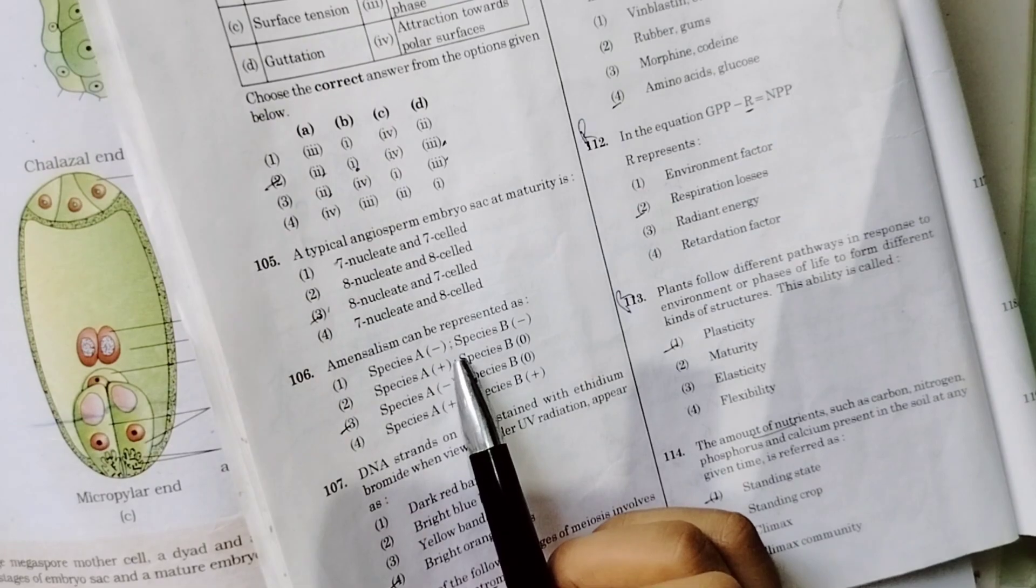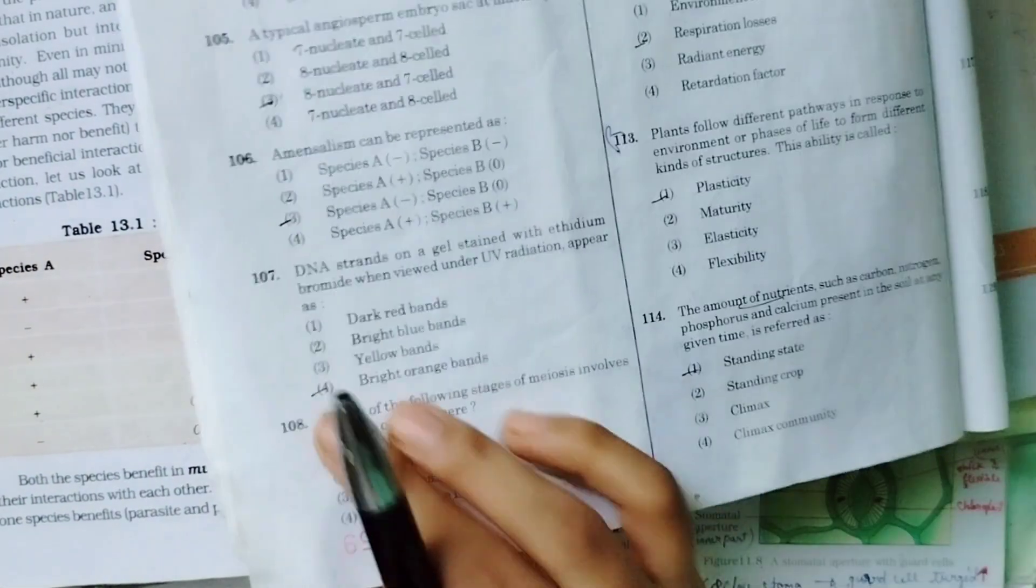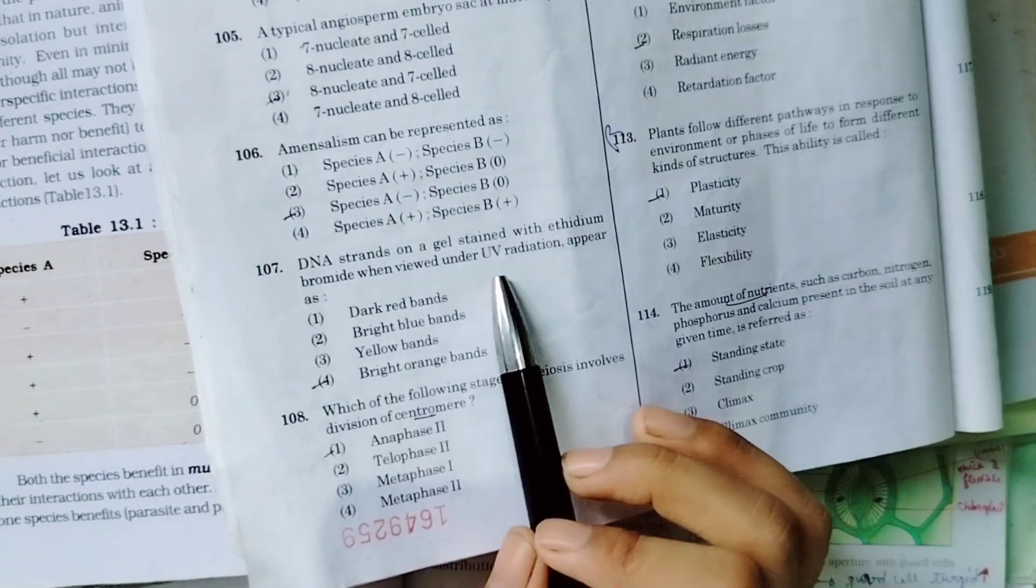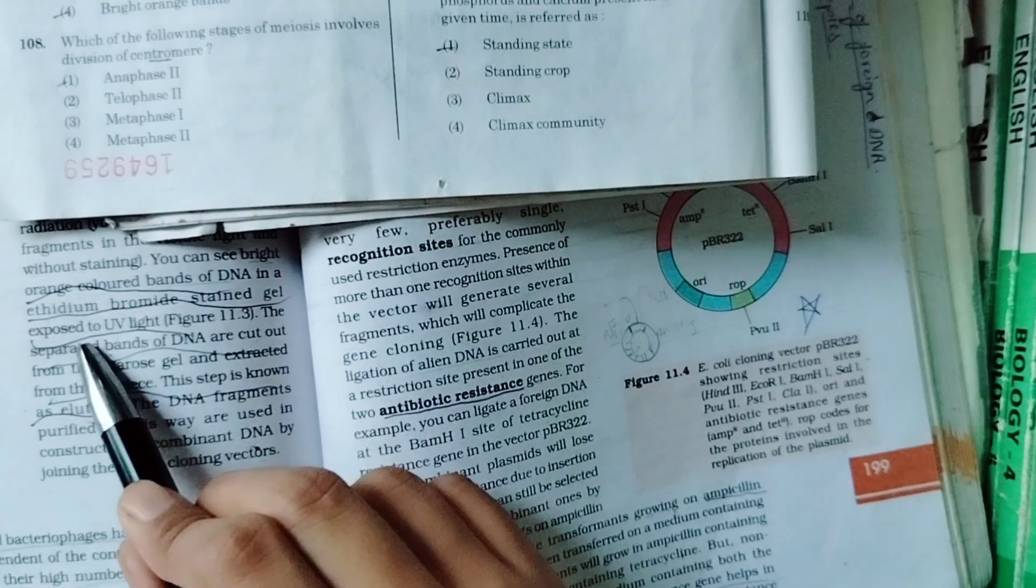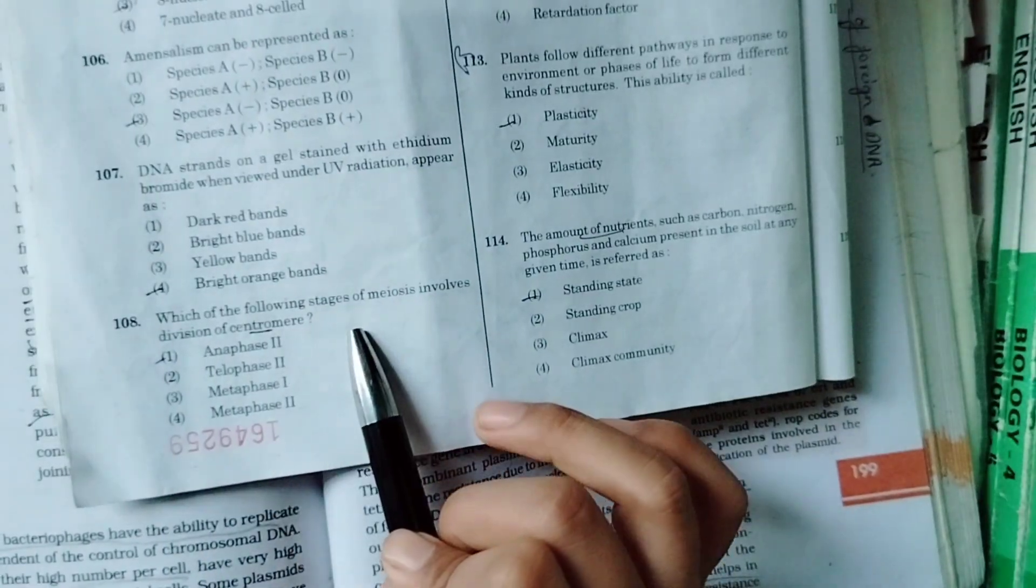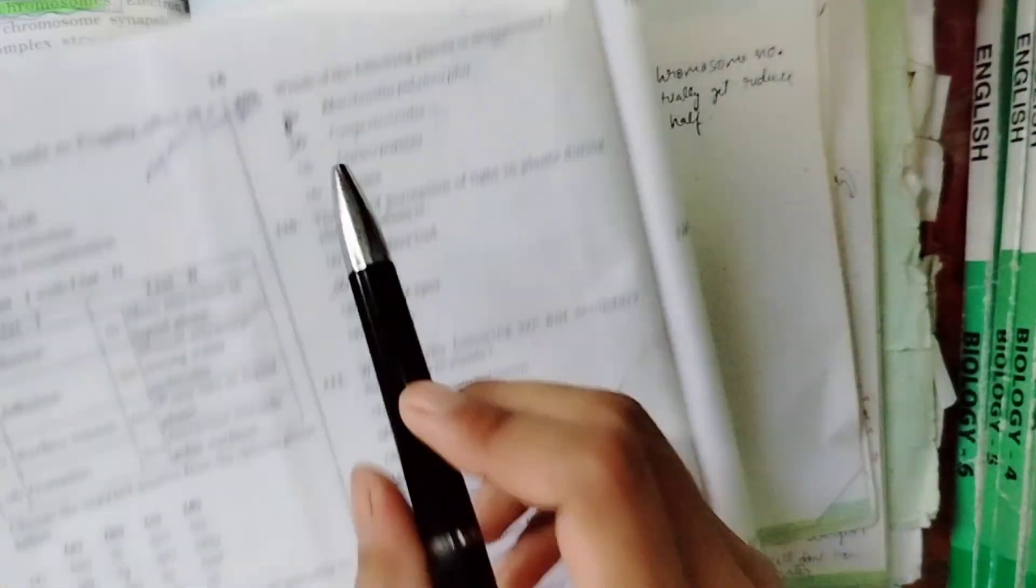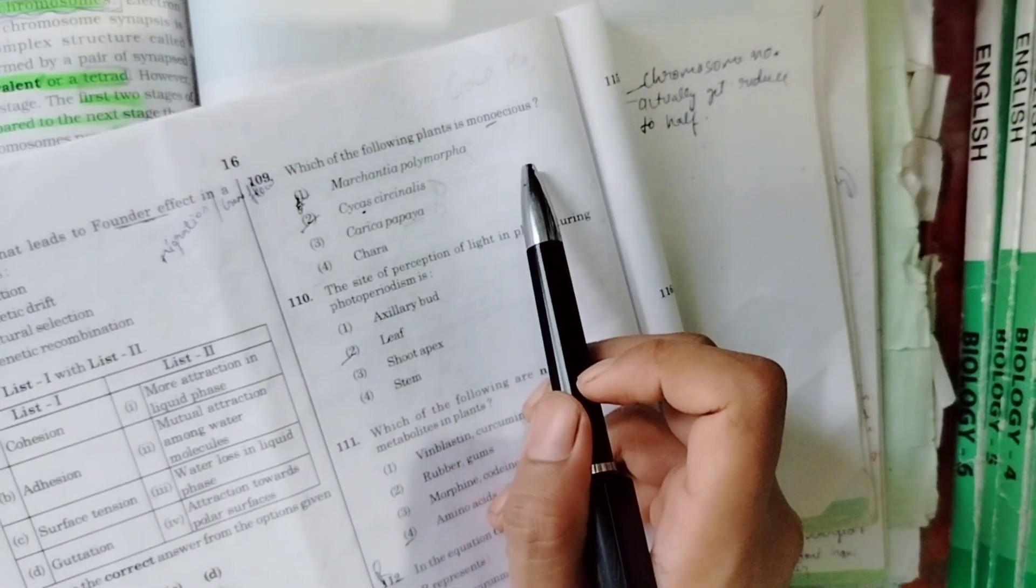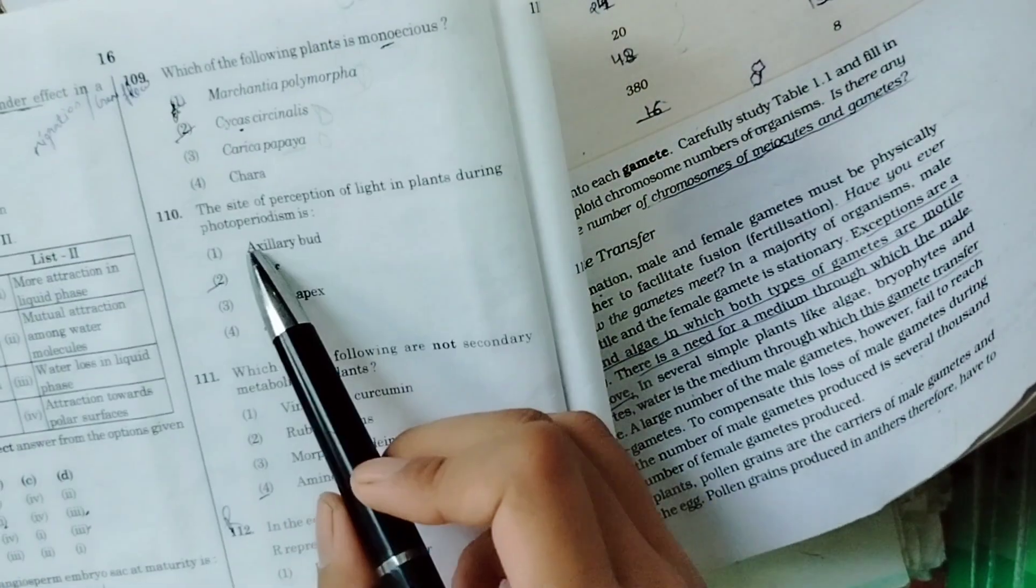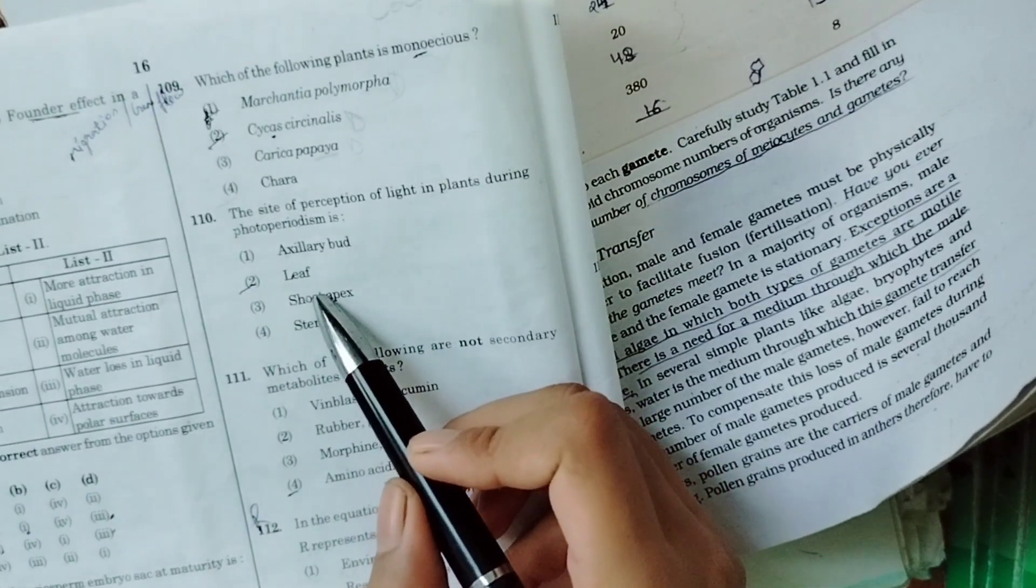Now amyl cellism, minus zero. DNA strands on a gel stained with ethidium bromide when viewed under UV radiation. Ethidium bromide. Which of the following stages of meiosis involves splitting of centromere of each chromosome. Which of the following plants is monocot - monocot's plant, Cara. The site of perception of light in plant during photoperiodism is leaf, in green leaves.